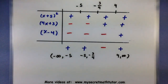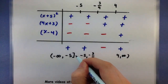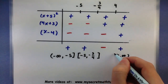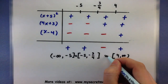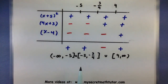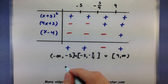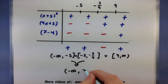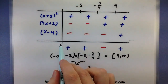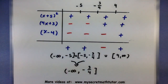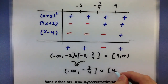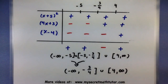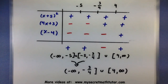Since it said greater than or equal to zero, I want to include each of these endpoints because at those points the polynomial equals zero. I'll put union symbols in. Notice these two intervals actually overlap — the first goes up to and includes negative 5, and the second also includes negative 5 and keeps going. So I'll combine them: from negative infinity up to negative 3 quarters, union 4 to infinity. This is the solution to my polynomial inequality. If you'd like to see more videos, please visit MySecretMathTutor.com.